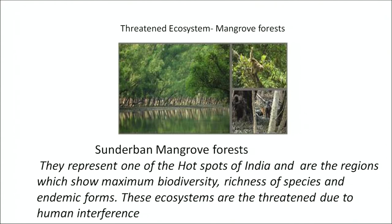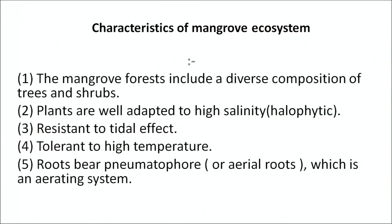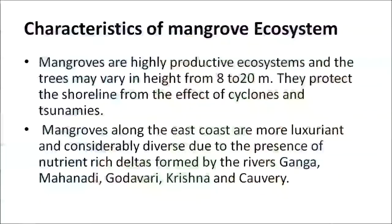These ecosystems are threatened mainly due to human interference. The mangrove forests include a diverse composition of trees and shrubs. Plants are well adapted to high salinity, resistant to tidal effects, and tolerant of high temperatures. Roots bear pneumatophores to help in aeration. Mangroves are highly productive ecosystems and trees may vary in height from 8 to 20 meters. They protect the shoreline from cyclones and tsunamis. Mangroves along the east coast are most luxuriant due to the presence of nutrient-rich deltas formed by the rivers Ganges, Mahanadi, Godavari, Krishna, and Kaveri.